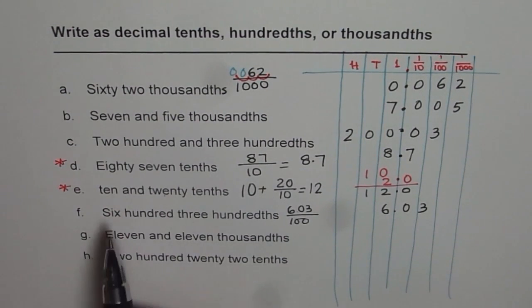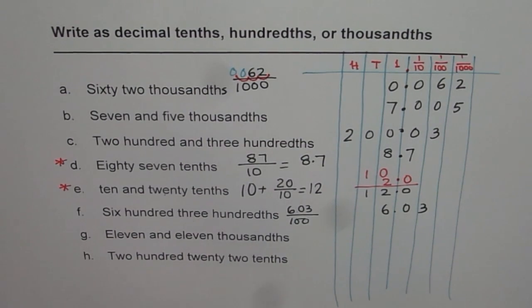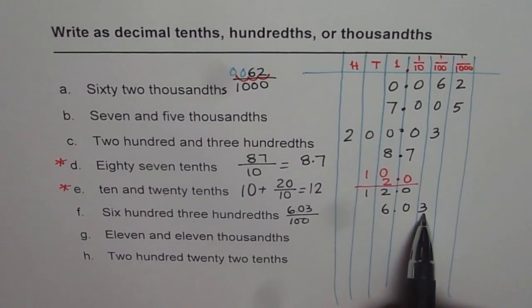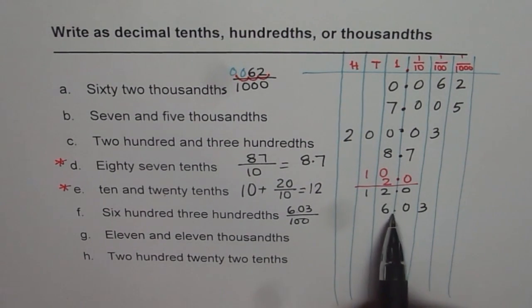The other way is six hundred three hundredths. So the number has to end at hundredths place. You get six zero three. Of course, decimal will come there, right?